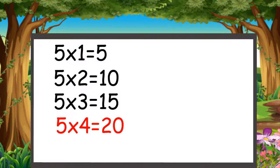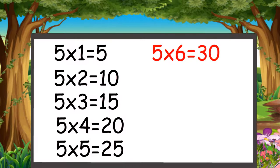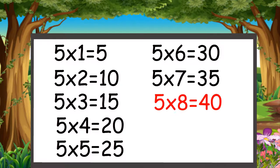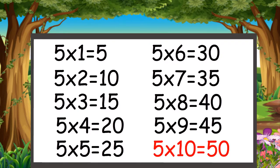Five fours are twenty, five fives are twenty-five, five sixes are thirty, five sevens are thirty-five, five eights are forty, five nines are forty-five, five tens are fifty.